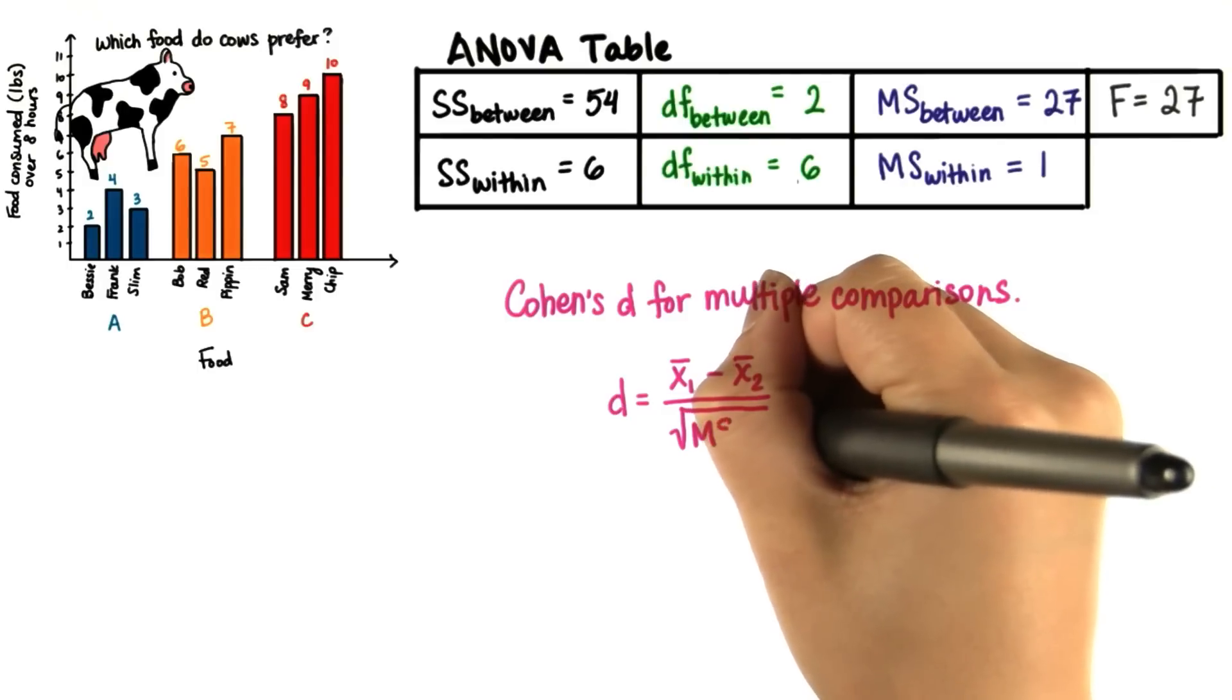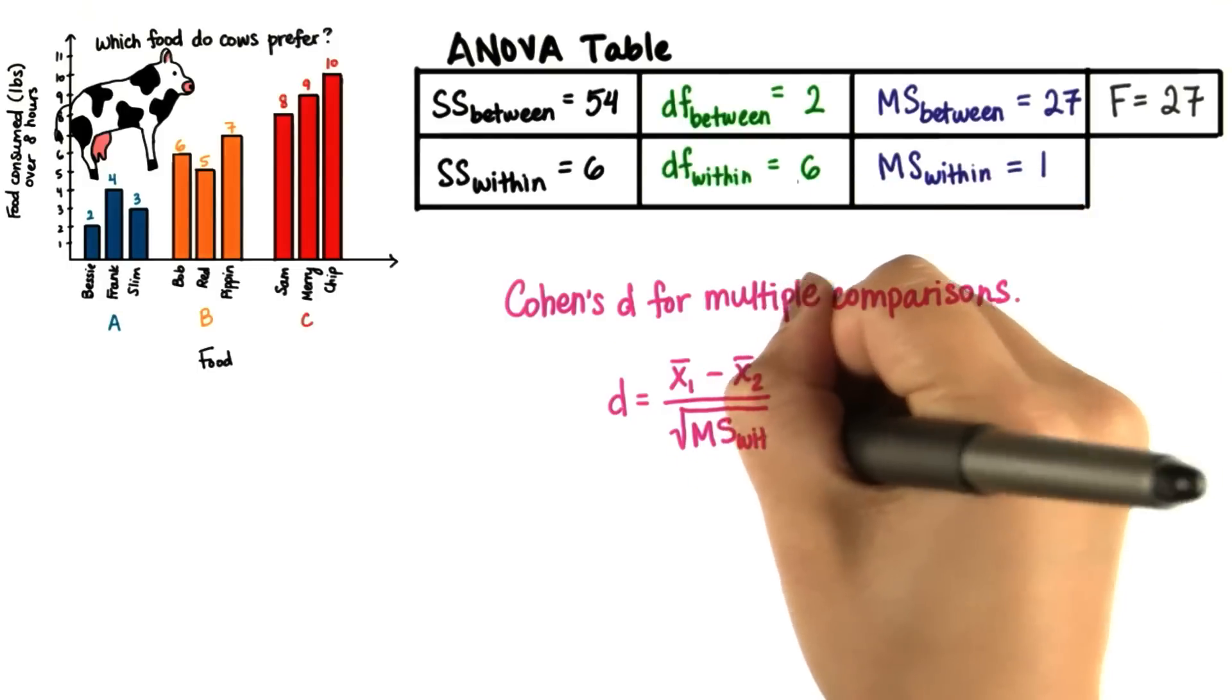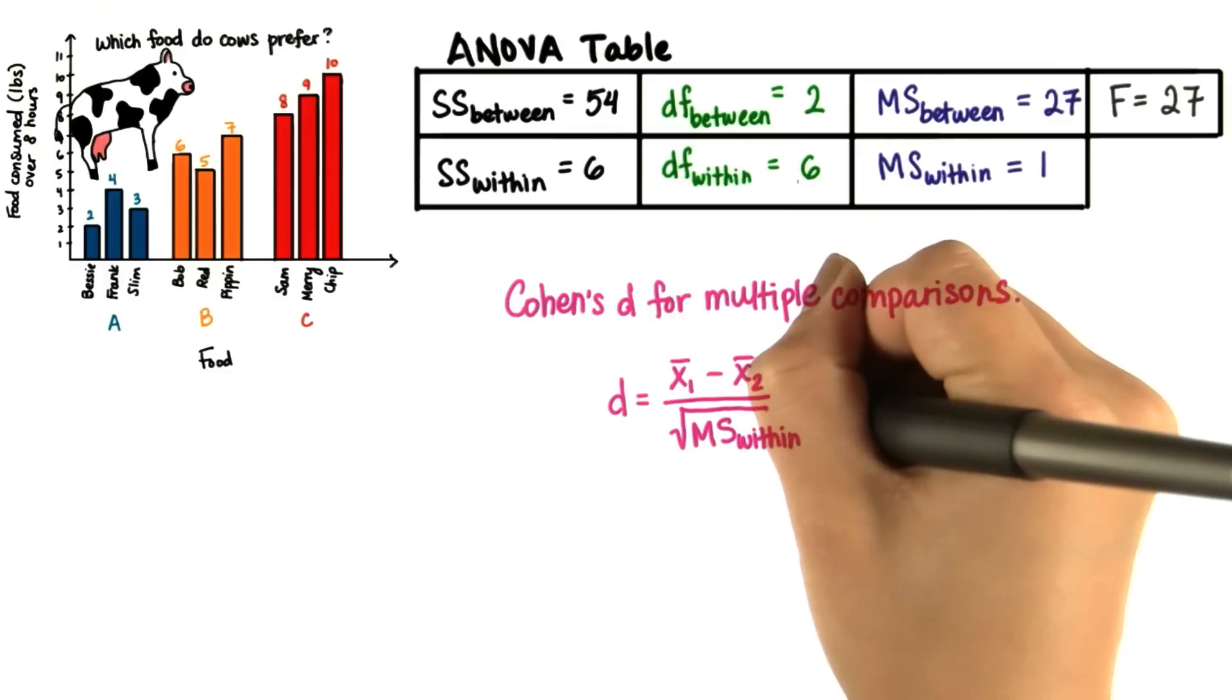You just learned that the square root of the mean square for within subject variability is essentially the pooled standard deviation.